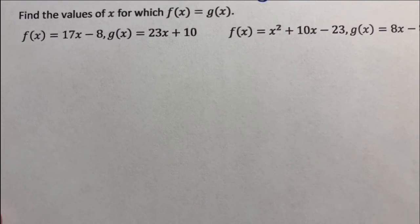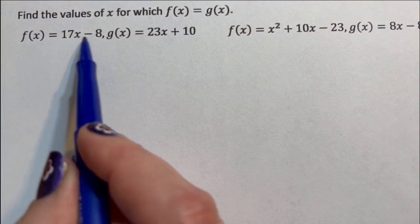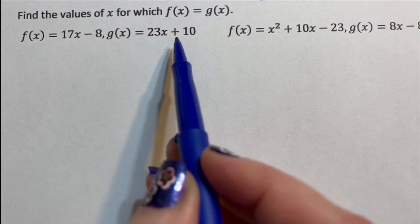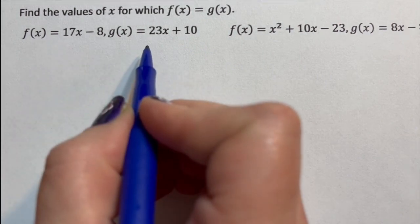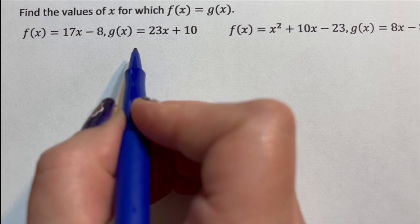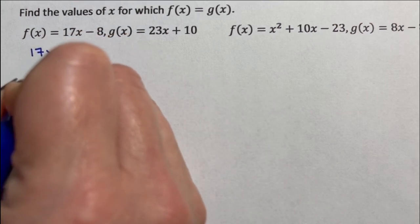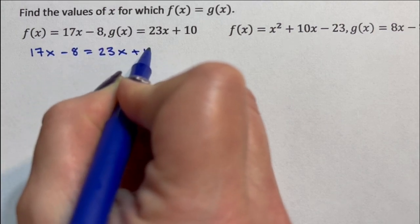Okay, so here I have two lines. f(x) equals 17x minus 8 and g(x) equals 23x plus 10. So the way I find the intersection point of these two lines, I just set them equal to each other. I say 17x minus 8 equals 23x plus 10.